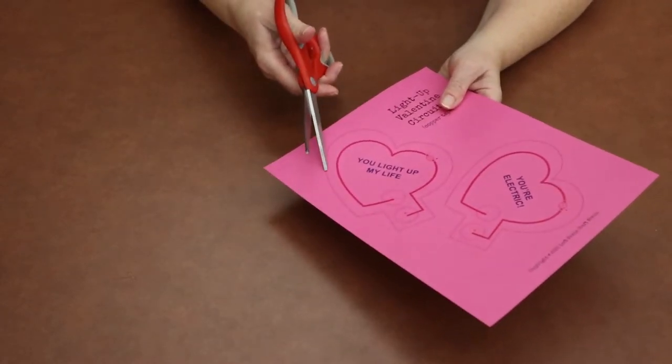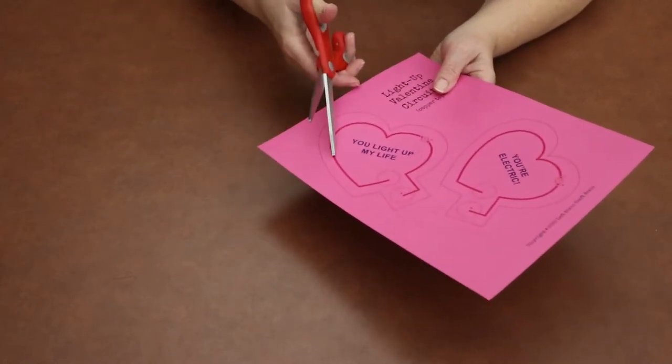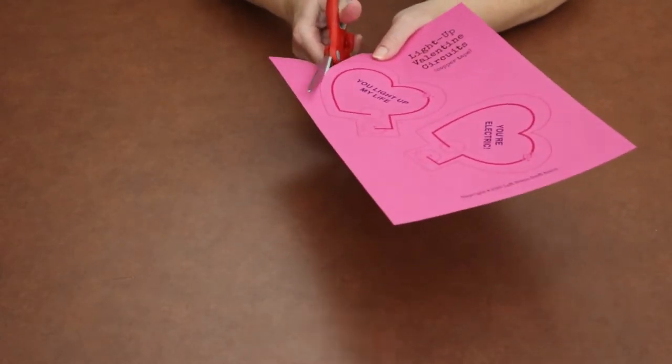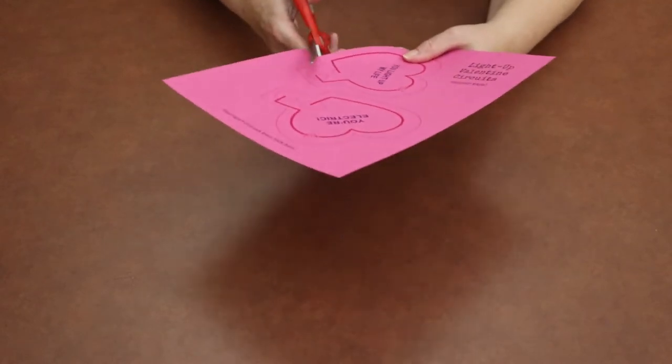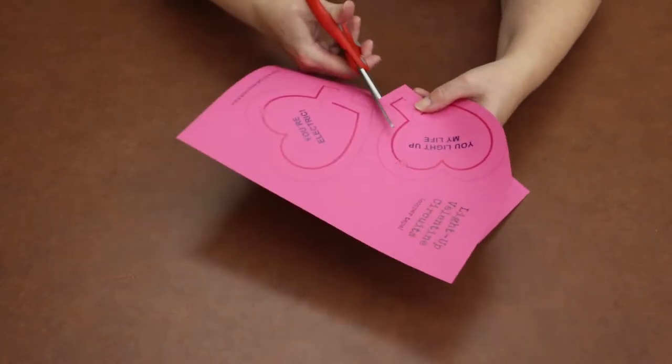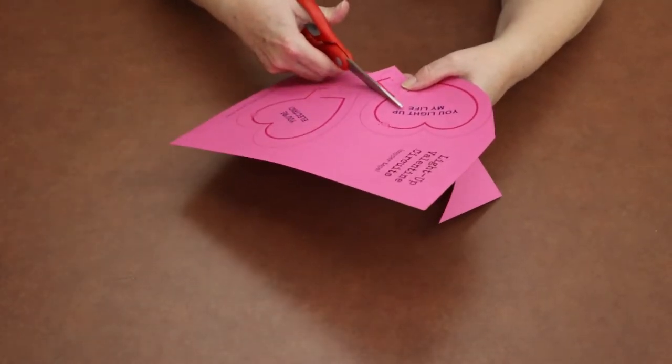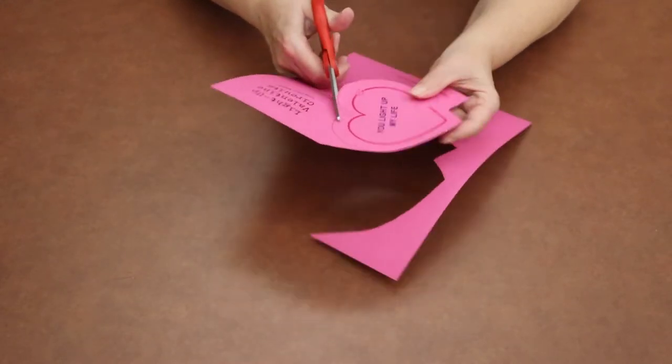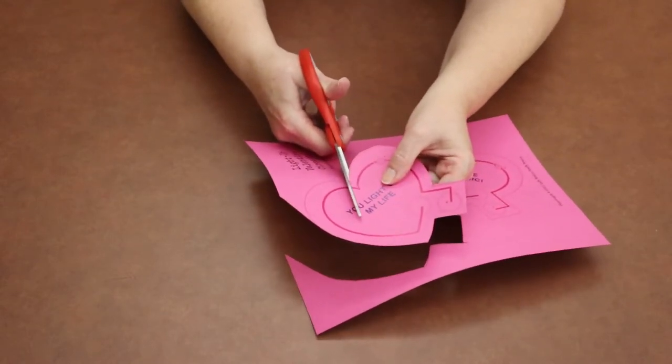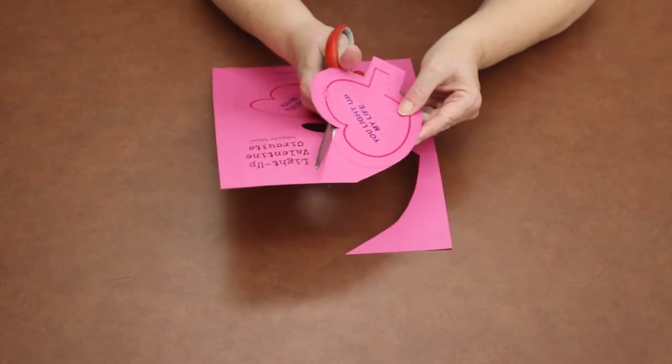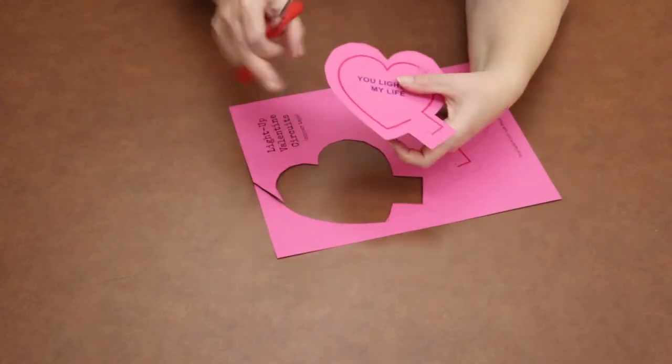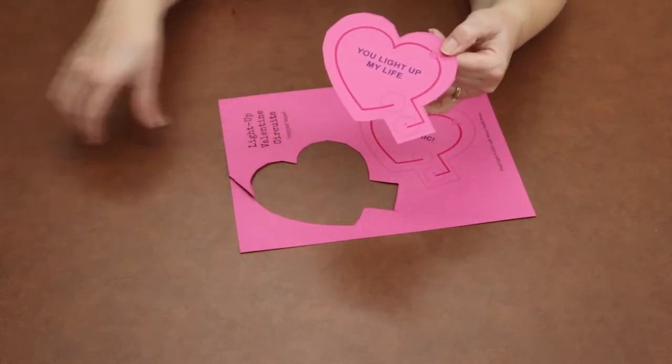So we'll take our scissors and this thinner outside line is the one that you want to cut around. Don't cut this one because that's the line we need to put our copper tape on. So just cut out your heart and it just takes a minute to go around this. Once you're done it's going to look something like this and then you can set your scissors and the template aside.